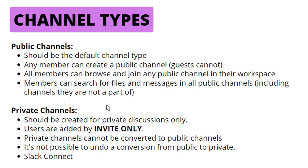For private channels, private channels should be created for private discussions only. Users can only be added to a private channel by invite only. Private channels cannot be converted into public channels. However, public channels can be converted to private channels — only workspace owners and admins, and org owners and admins, can do that conversion. Once a channel has been converted to private, files within that channel will not become private. And if you want to make a Slack Connect channel private, it will only become private for your workspace, not for the workspace you're sharing the channel with — so none of the external stakeholders with access to that channel will be affected.